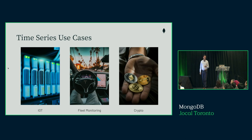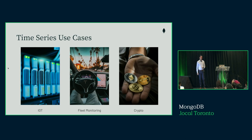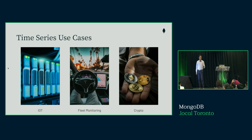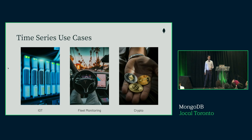IoT is the most common use case for time series data — collecting sensor data from smart thermometers, watches, Fitbits at regular intervals. Then there's fleet monitoring: industrial machinery, vehicles, and instruments all generate time series data for predictive maintenance. And finally, the financial industry uses it for stock tickers and cryptocurrency prices. This industry is getting more popular as we introduce more smart IoT devices, and we have many customers using MongoDB to store time series data.